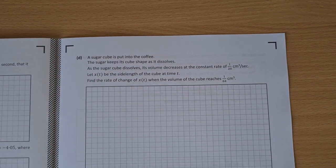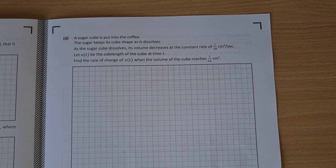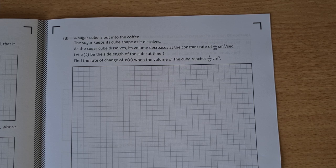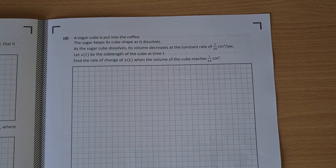The sugar cube. Yeah, this one. The sugar cube was put into coffee. The sugar keeps its cube shape as it dissolves. So probably a hypothetical situation here. As the sugar cube dissolves its volume decreases at a constant rate. Find a rate of change. So a rates of change question there.